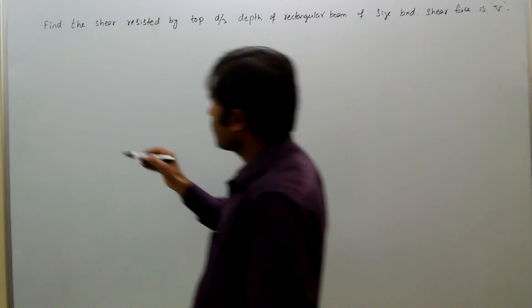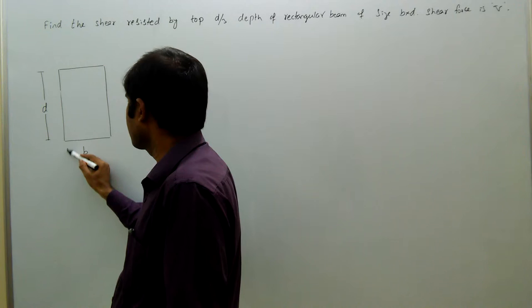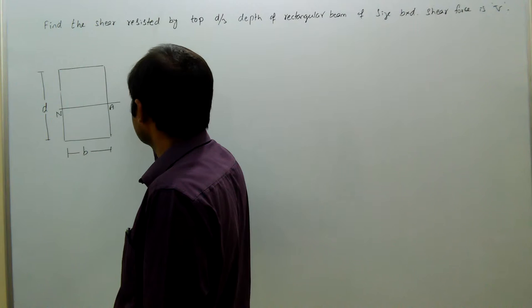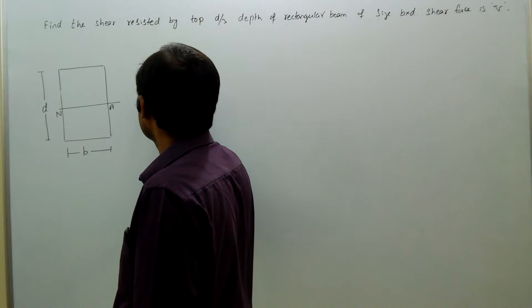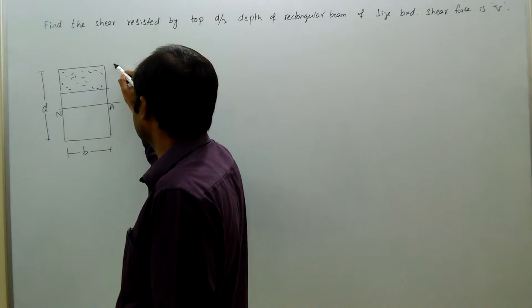Take this section v by d, little x is here until d by 2 from top or bottom. The shear force is measured by this section, that is top d by 3, that means this is d by 3.